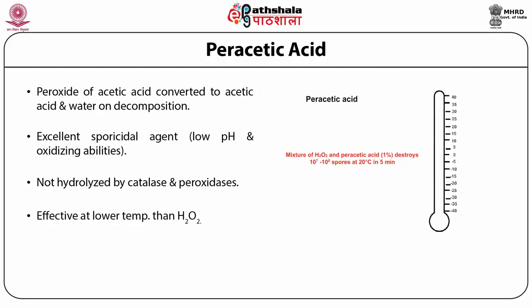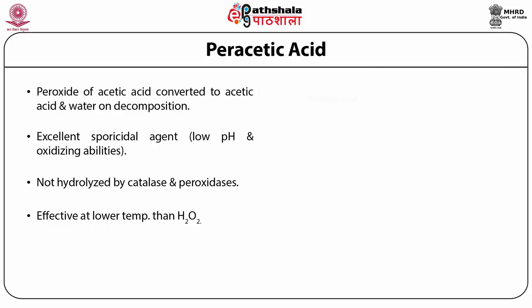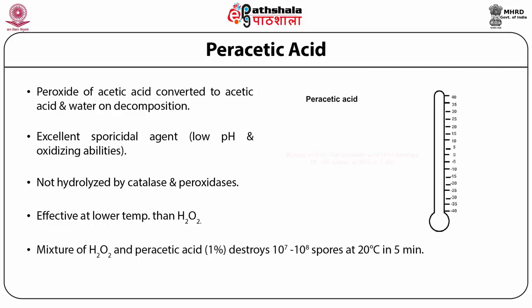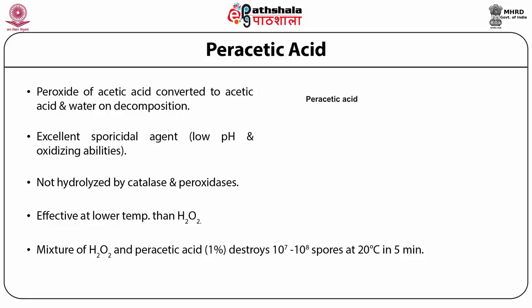In practice, peracetic acid is used in the form of a solution along with hydrogen peroxide. The solution containing peracetic acid and hydrogen peroxide is effective against resistant bacterial spores even at 20 degrees Celsius.